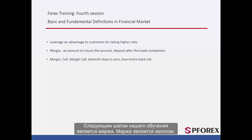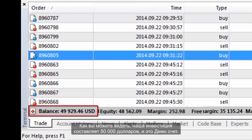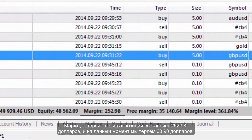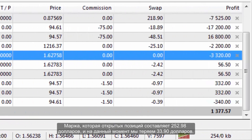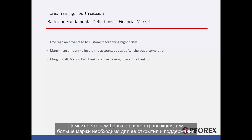The next step is margin. A margin is a collateral that the holder of a financial instrument has to deposit to cover some or all of the credit risk of their counterparty, most often their broker or an exchange. Our investment is $50,000 on this demo account. The margin required for the positions here is $252.98 and at the moment we are losing $33.90. If we add our profit or loss to the amount of margin, we will have a free margin. Any time that we close the position, the free margin amount will be charged to the account. Remember that the bigger the size of a transaction, the bigger the margin it requires. When a party miscalculates their account and the account goes down almost to zero, it is referred to as a margin call.